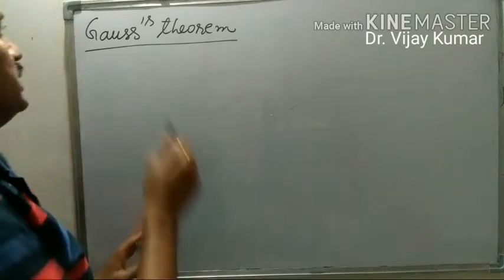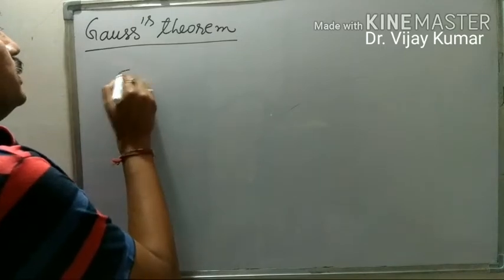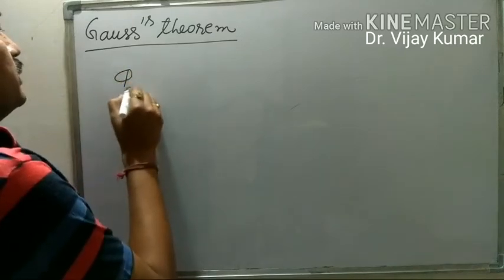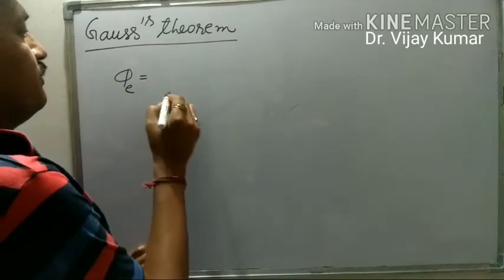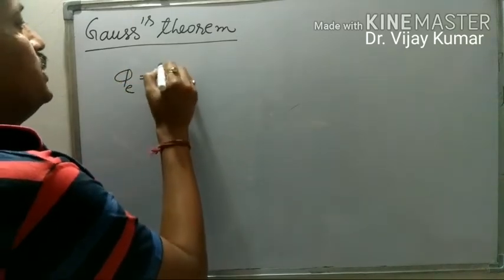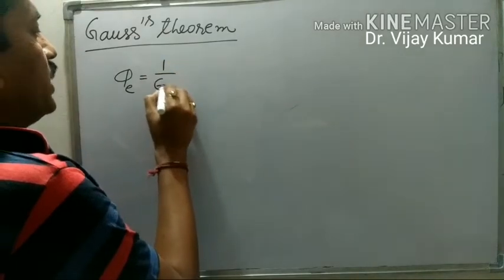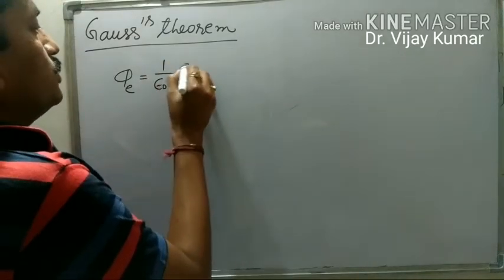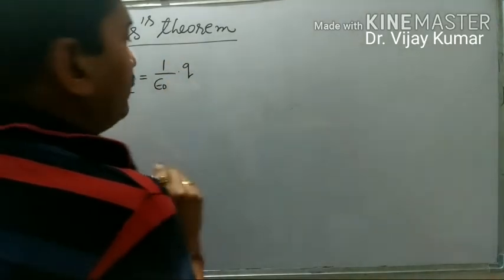As per the statement of this theorem, electric flux passing through any surface is 1 upon epsilon naught times the charge enclosed by the surface.